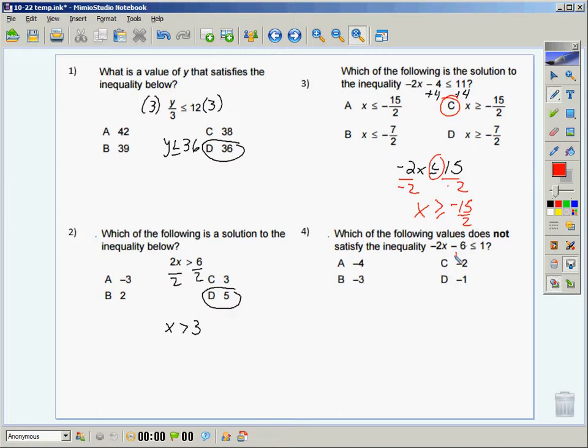Number four, I'd have added six to both sides. I'd have had a negative 2x is less than or equal to seven. I would have, again, divided both sides by a negative 2. I would have had to flip my inequality. Negative 7 halves, or I could have written a negative 3.5. The only number that would not satisfy this: negative 3 is greater, negative 2 is greater, negative 1 is greater, but negative 4 is less. So the correct answer would have been A.